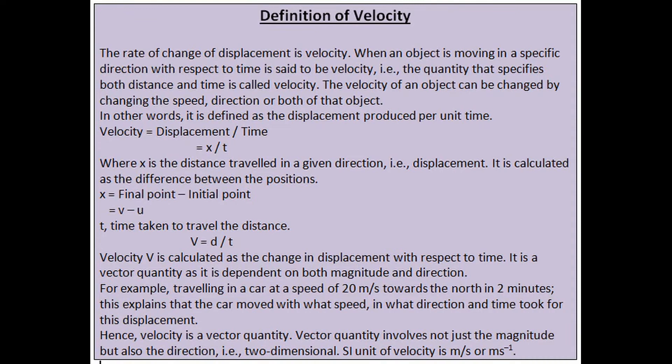Velocity v is calculated as the change in displacement with respect to time. It is a vector quantity as it is dependent on both magnitude and direction. For example, traveling in a car at a speed of 20 meters per second towards the north in two minutes explains the speed, direction, and time of displacement. Hence velocity is a vector quantity, involving not just magnitude but also direction — i.e., two-dimensional. The SI unit of velocity is meter per second, or ms⁻¹.